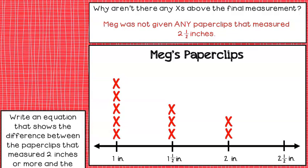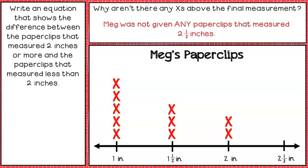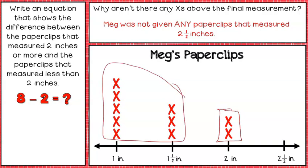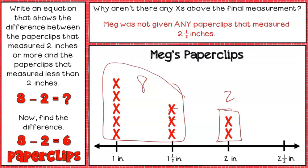Write an equation showing the difference between paper clips that measured two inches or more and paper clips that measured less than two inches. The ones measuring two or more: there are two. The ones measuring less than two: one, two, three, four, five, six, seven, eight. So the equation is eight minus two equals six paper clips.